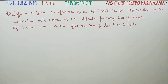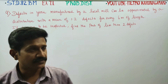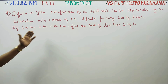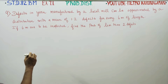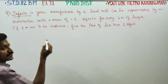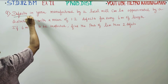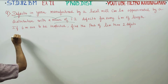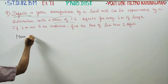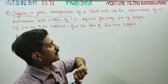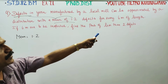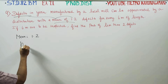Dear 12th standard business math students, in exercise 7.1, sum number 9: defects in yarn manufactured by a local mill can be approximated by a distribution with a mean of 1.2 defects for every 6 meters of length. If 6 meters are to be inspected, find the probability of less than 2 defects. Here n is equal to 6 meters.